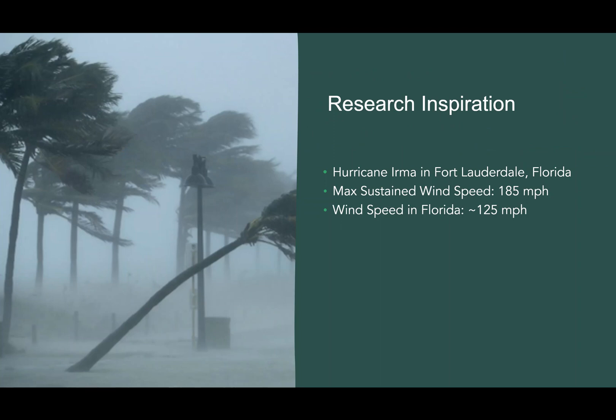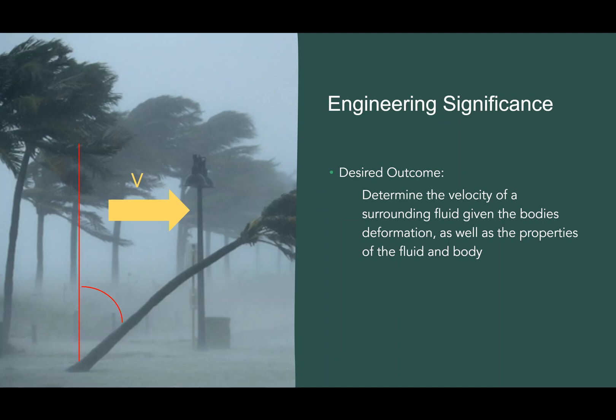Our inspiration for this research lies in pictures like this — a tree being blown away by an extremely severe hurricane. We looked at this photo and asked ourselves, is there any way to know the speed of this wind by observing the deformation occurring within the tree? The answer is yes. With a bit of research, it is possible to measure the velocity of the fluid, or in this case wind, affecting our body or tree. By using an experimental method to visualize aerodynamics of the tree, we can gather the data required to answer that question.